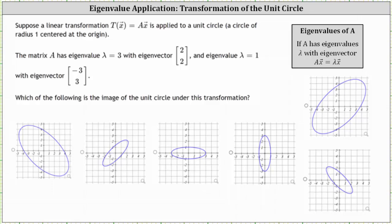Suppose a linear transformation T of vector x equals matrix A times vector x is applied to a unit circle. The matrix A has an eigenvalue of lambda equals three with eigenvector (2, 2), and eigenvalue lambda equals one with eigenvector (-3, 3). Which of the following is the image of the unit circle under this transformation?